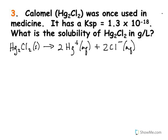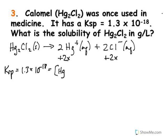Now, if you think of our ICE charts, the change row gives us plus x for Hg²⁺ and plus 2x for Cl⁻. The Ksp is equal to 1.3 times 10 to the negative 18th, which equals the molar concentration of Hg²⁺ in solution times the molar concentration of Cl⁻ in solution squared.